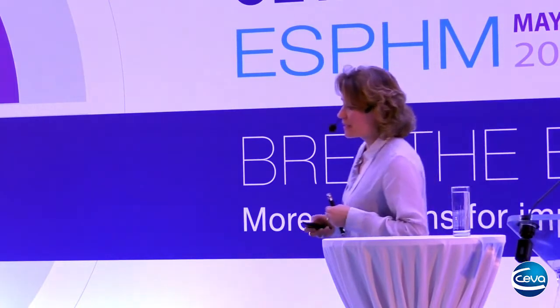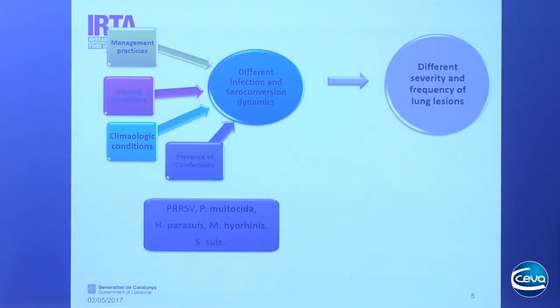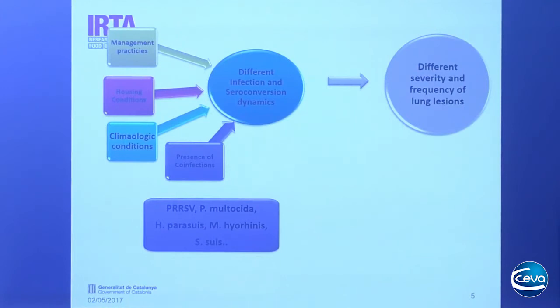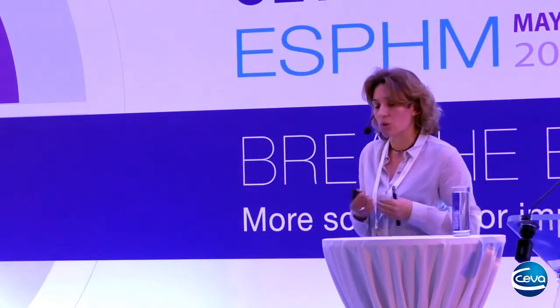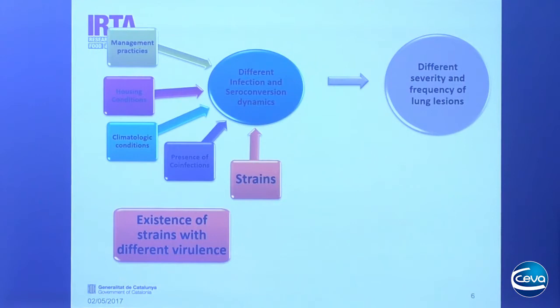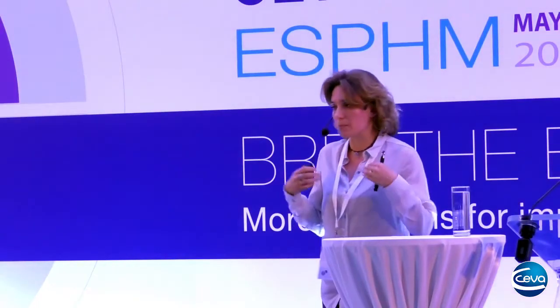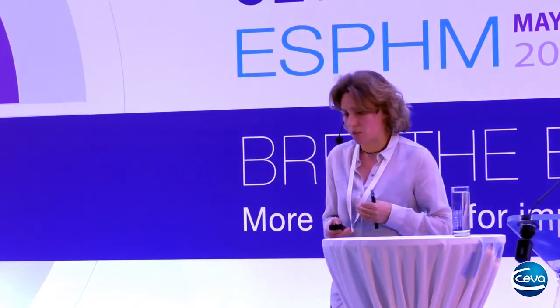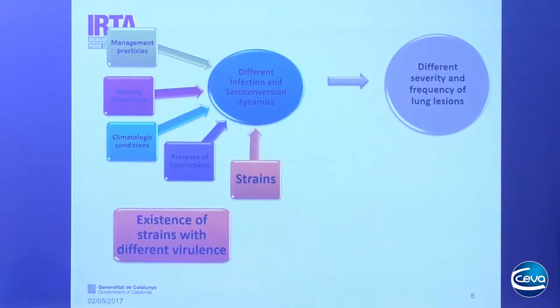The presence of other pathogens — such as PRRS, Pasteurella multocida, Mycoplasma hyorhinis, and Haemophilus parasuis — will trigger additional clinical signs when porcine respiratory disease complex occurs. Nowadays, another factor is gaining more importance: the existence of different Mycoplasma strains. In this presentation I will explain the current knowledge about this topic — what we know and what we don't know.